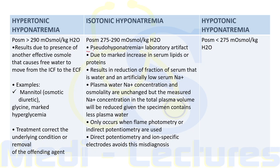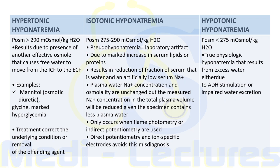Isotonic hyponatremia is also known as pseudo-hyponatremia because it is a laboratory artifact. It is due to a marked increase in serum lipids or proteins, which reduces the fraction of serum that is water, showing an artificially low serum sodium. The plasma water sodium concentration and osmolality are unchanged, but the measured sodium in total plasma volume is reduced. This artifact occurs only with flame photometry or indirect potentiometry, and can be corrected using direct potentiometry with ion-specific electrodes.